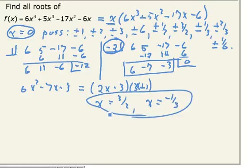So the four zeros are 0, negative 2, 3 halves, and negative 1 third.